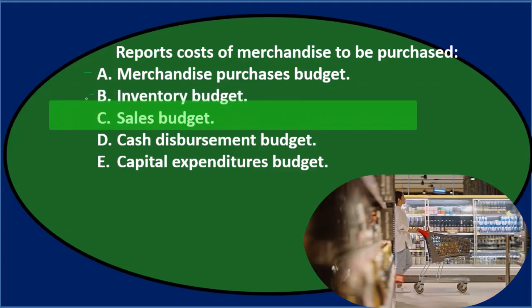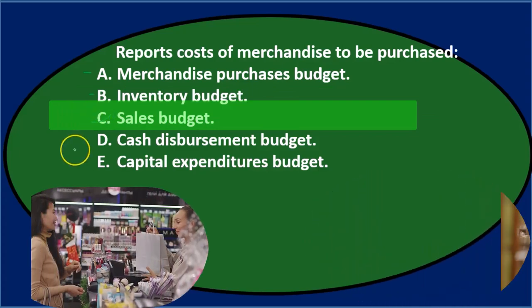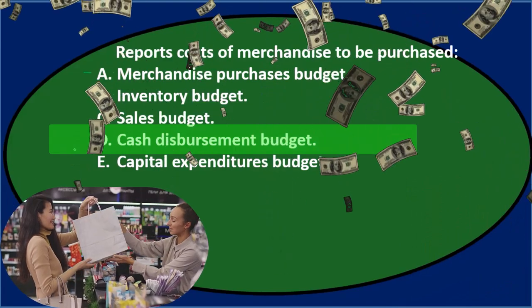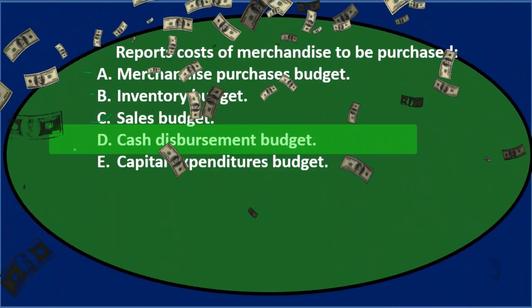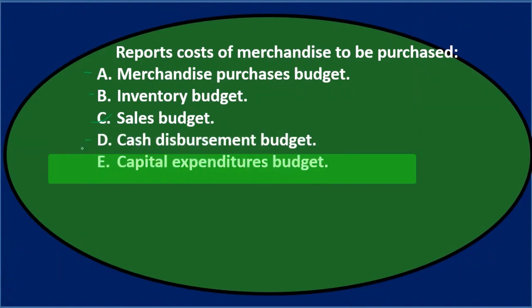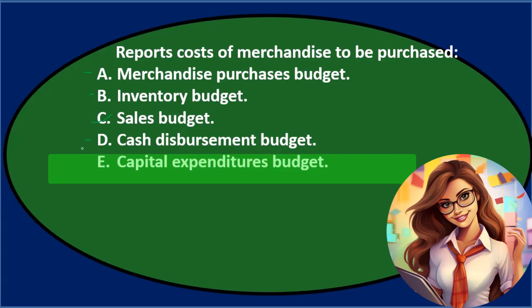C. Sales Budget — that would be selling stuff, not purchasing stuff, so I don't think that's it. D. Cash Disbursements Budget — we are kind of dispersing cash, possibly, or accounts payable going up, so I'll keep that. E. Capital Expenditures Budget — that has to do with expenditures for property, plant, and equipment, not merchandise or inventory, so I don't think it's E.